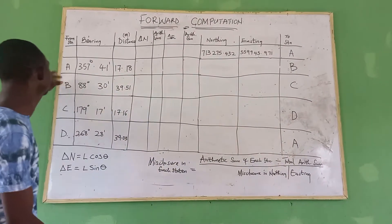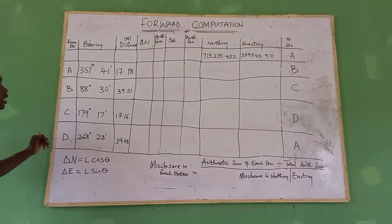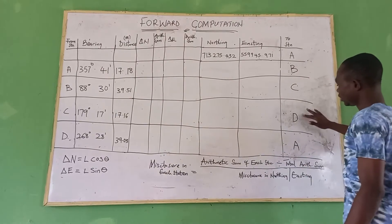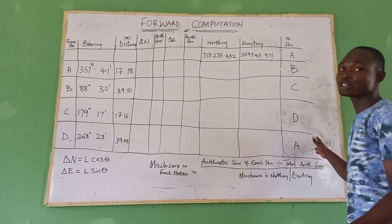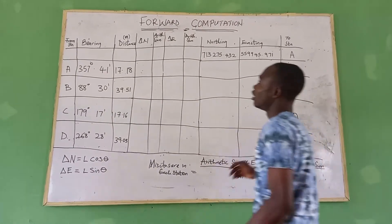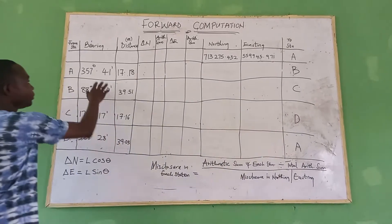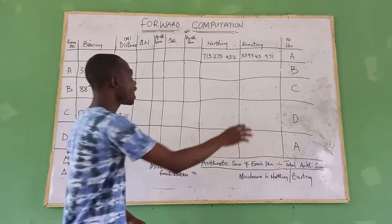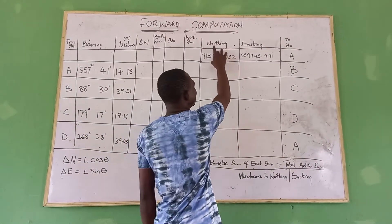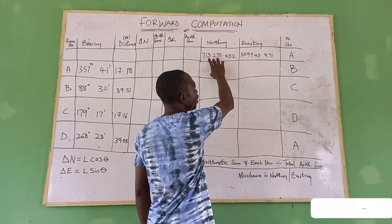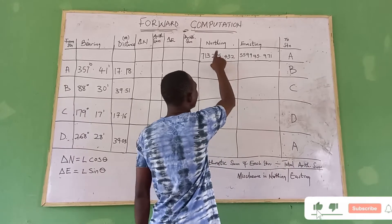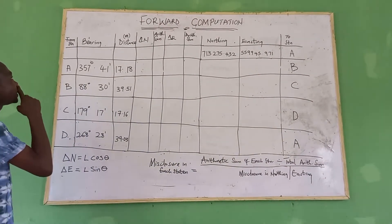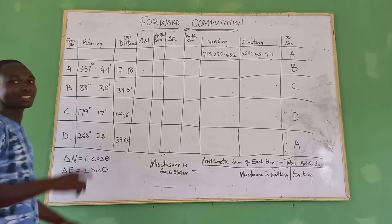We have four stations A, B, C, D — to station A, B, C, D, then back to A — which will be a closed traverse. Here we have our bearing and distance from the four stations, then we have the initial coordinates for station A, northing and easting. So what we are going to do is to calculate delta northing and delta easting.